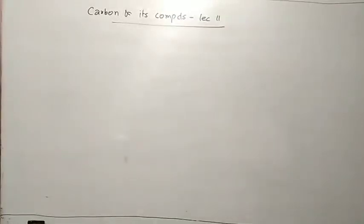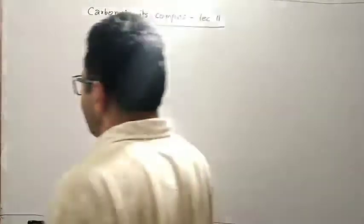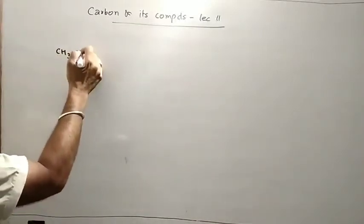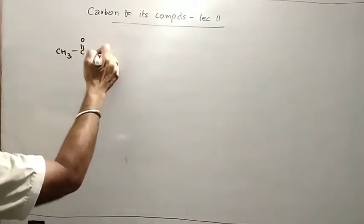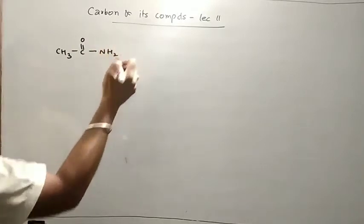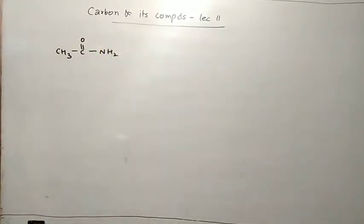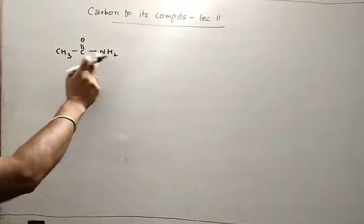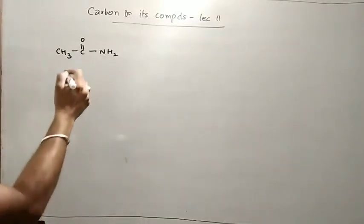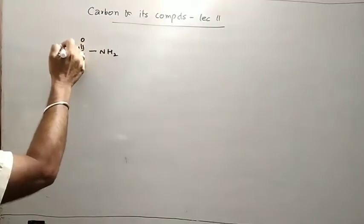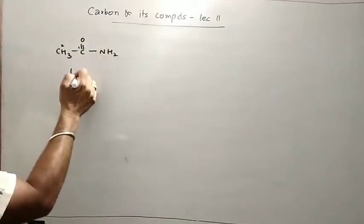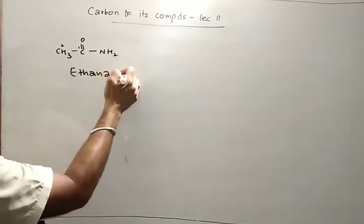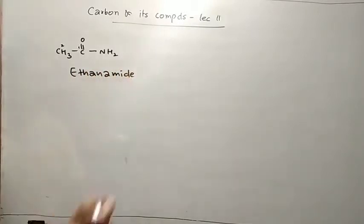In this lecture we will discuss some problems related to carboxylic acid derivatives like CH3-C=O-NH2. When there is an NH2 group present adjacent to C=O, it is an amide. The numbering gives us the name ethanamide. Amide is the suffix.